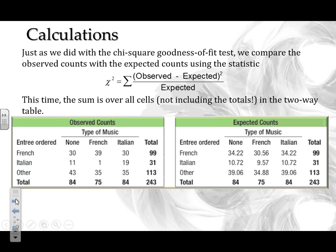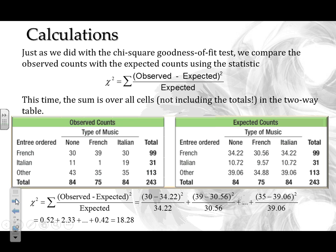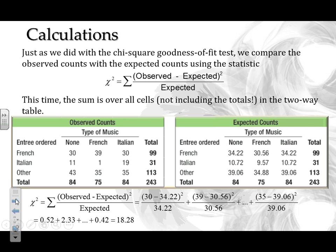Going through this process cell by cell — 30 minus 34.22 squared divided by 34.22, then 39 and so on — at the end we get our chi-square statistic of 18.28 in this case.